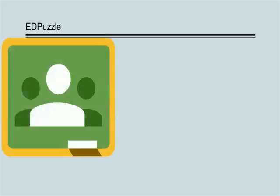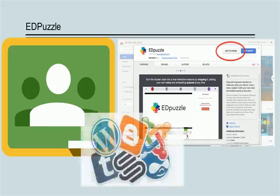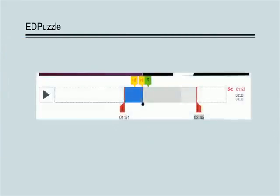Edpuzzle is easy to use and is also compatible with Google Classroom. It has an extension in Chrome that will allow Edpuzzle to give you editing and autosave options when you are viewing a YouTube video, and can even be embedded in class blogs. It gives you the ability to crop and pause the video so that you can embed writing prompts or give reminders to your students about things like taking notes. The extensive options for personalization and differentiation make it incredibly useful when you are designing a web-based learning module.